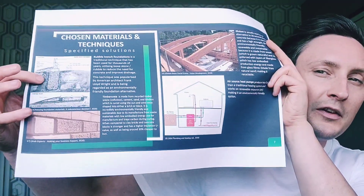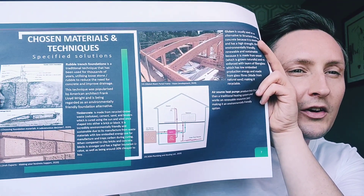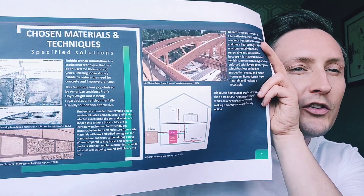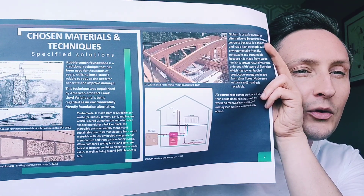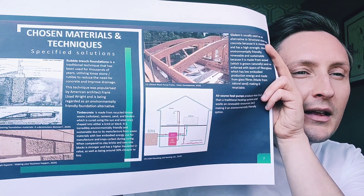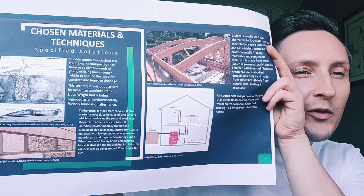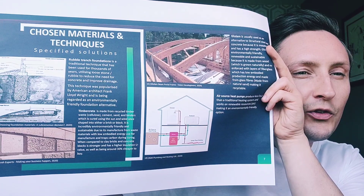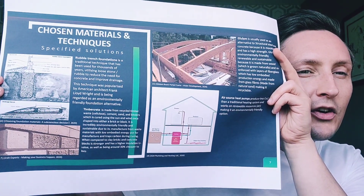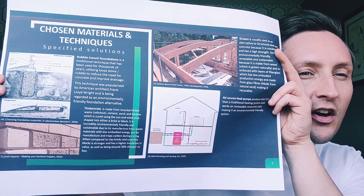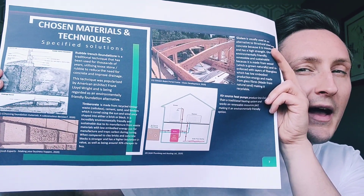Another modern construction material and technique would be to use timber crepe, which is made from recycled waste cellulose, cement, sand and binders, and is cured using the sun and wind once shaped into a brick or block shape. It is incredibly environmentally friendly and sustainable due to its manufacture from waste materials and low embodied energy use, and traps carbon during curing. When compared to clay bricks and concrete blocks, it is stronger, has a higher insulation value, and is around 30% cheaper to buy.